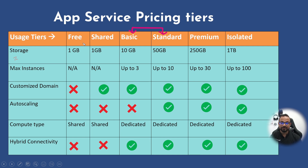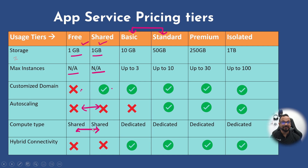The Free tier and Shared tier both provide storage of one gigabyte each. They don't support multiple instances — they come with a default of one instance per app service. The Free tier does not support custom domains, but the Shared tier does. Neither supports auto scaling. They run on shared hardware, meaning the underlying OS is shared by other users and organizations.